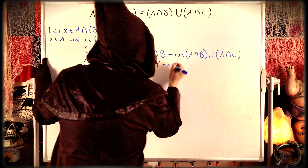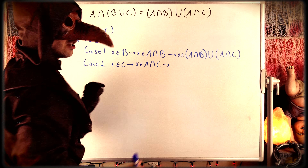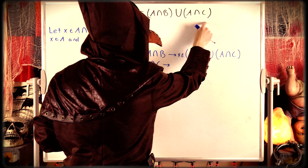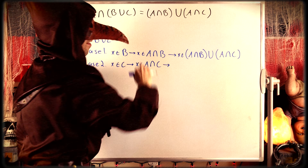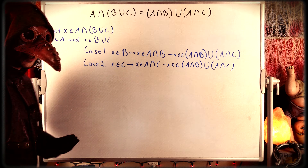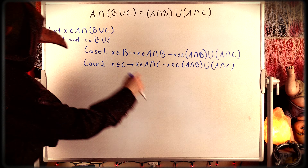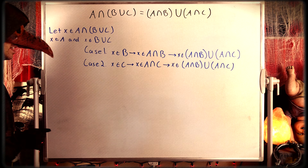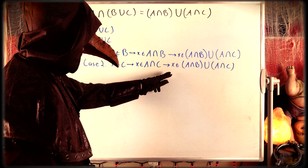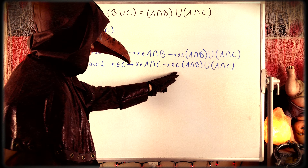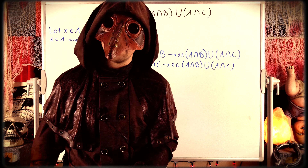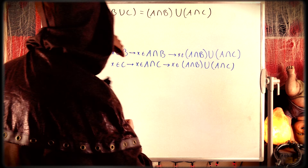Then by definition of set union, if x is an element of A intersect C, x is an element of A intersect B union A intersect C. So we see that any arbitrary element of A intersect B union C must also be an element of A intersect B union A intersect C.